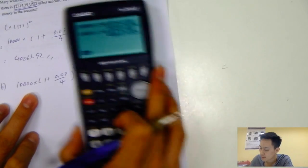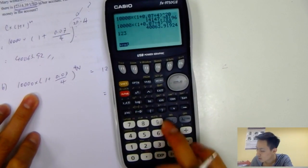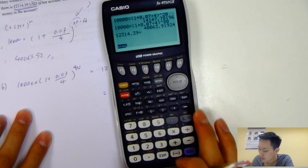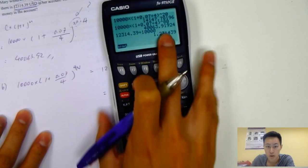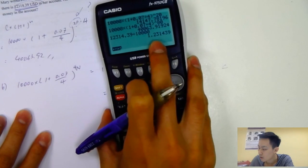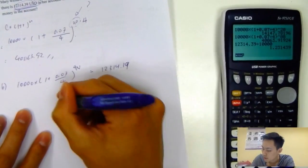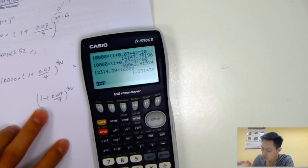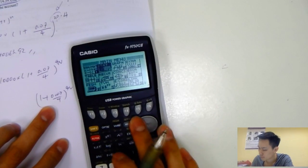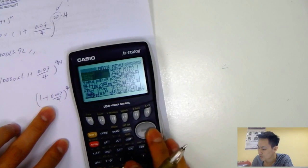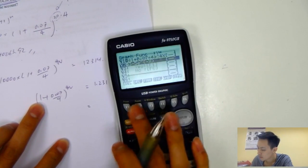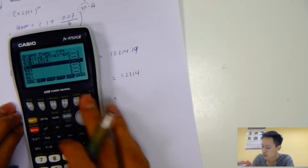How do you solve this one? You need to solve it using your GDC. First, I'll move the thing over to the right side. It's 12,314.39 divided by 10,000. So it's 1.231414, equals 1 plus 0.07 divide by 4, power 4n. How to solve this equation? You can just plot the graph. Plot 1 plus 0.07 divide by 4, power 4x. And then plot 1.231414. You'll find the intersection.